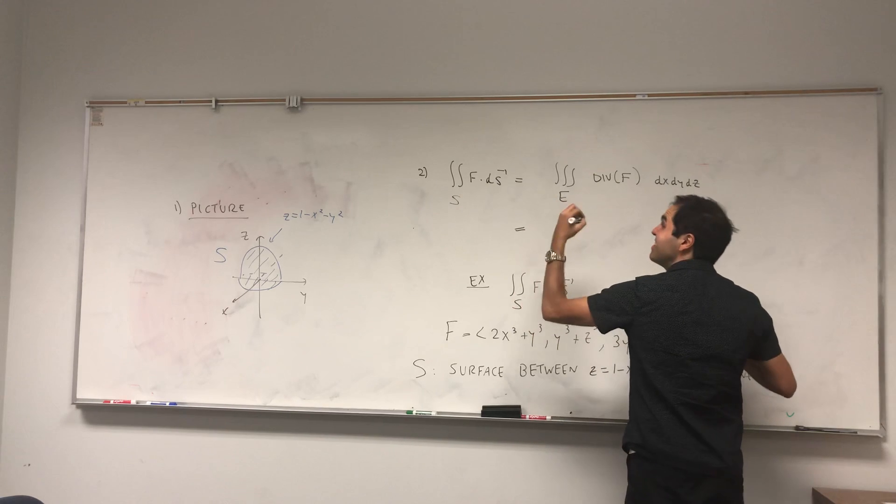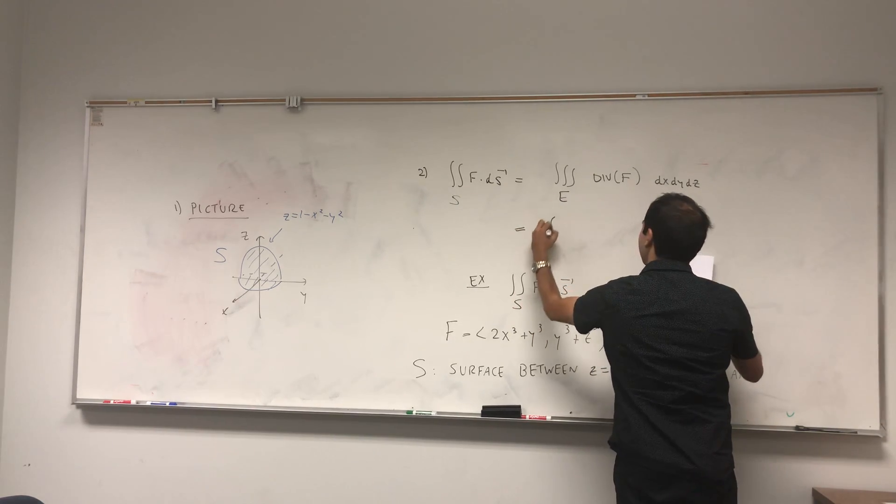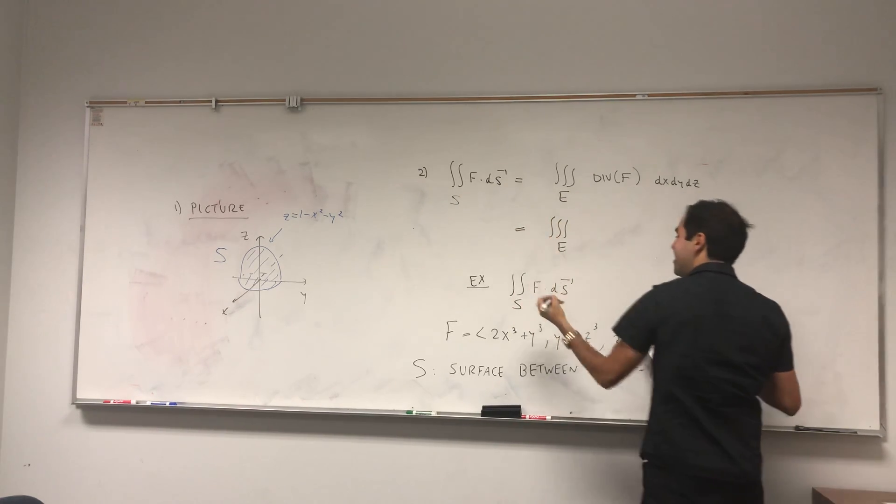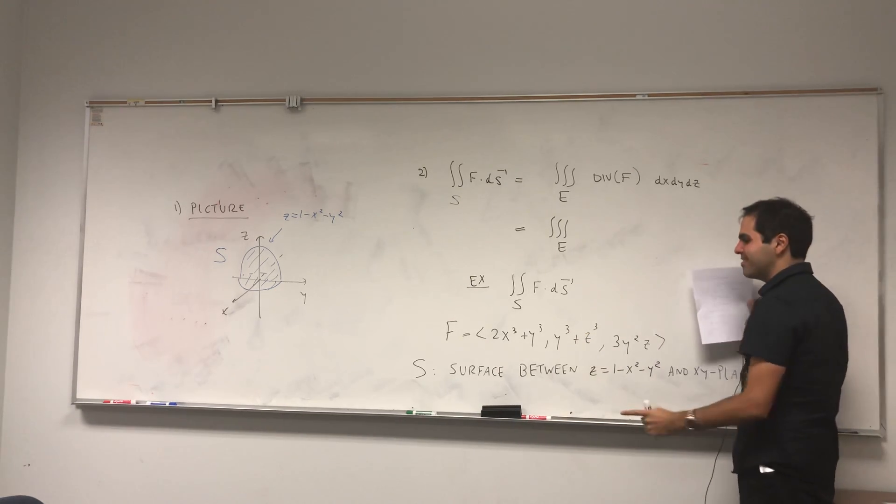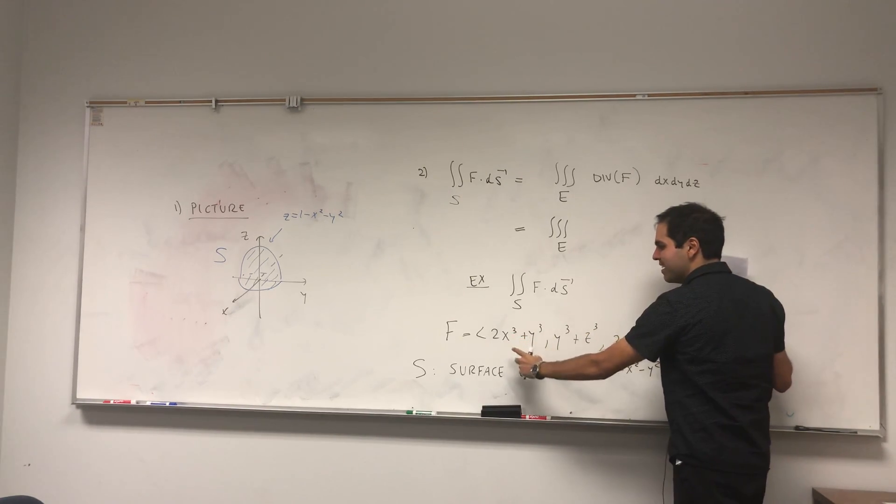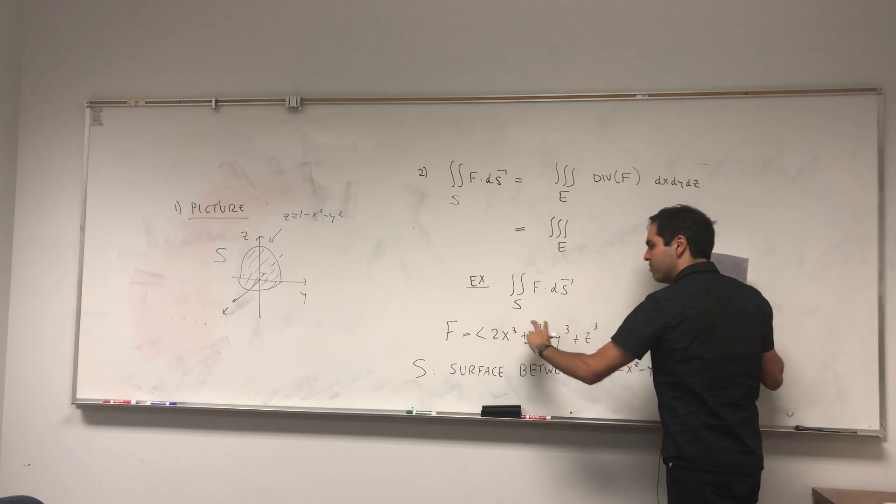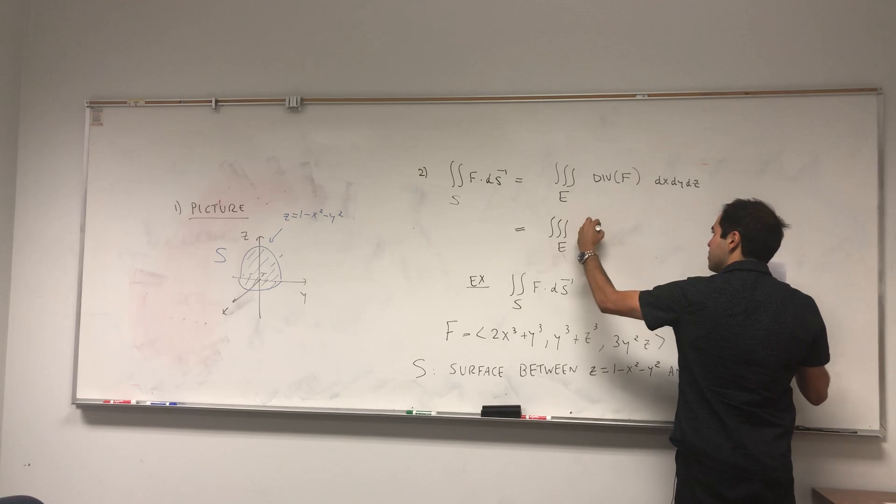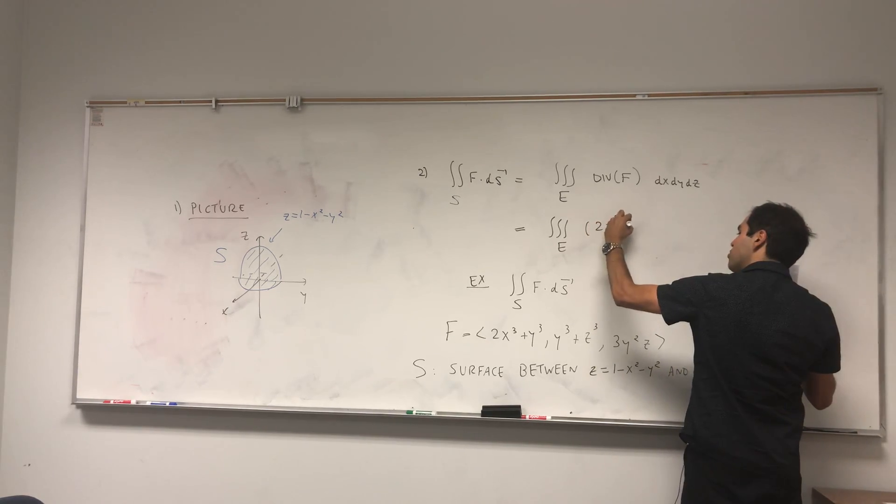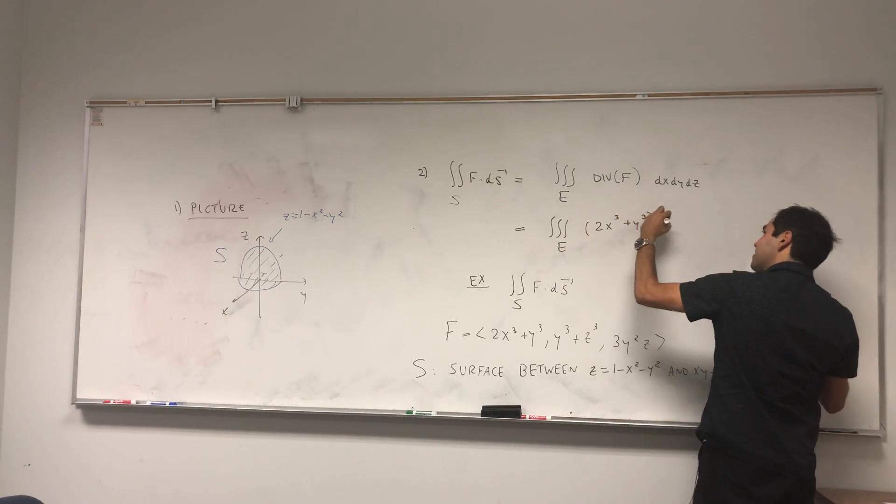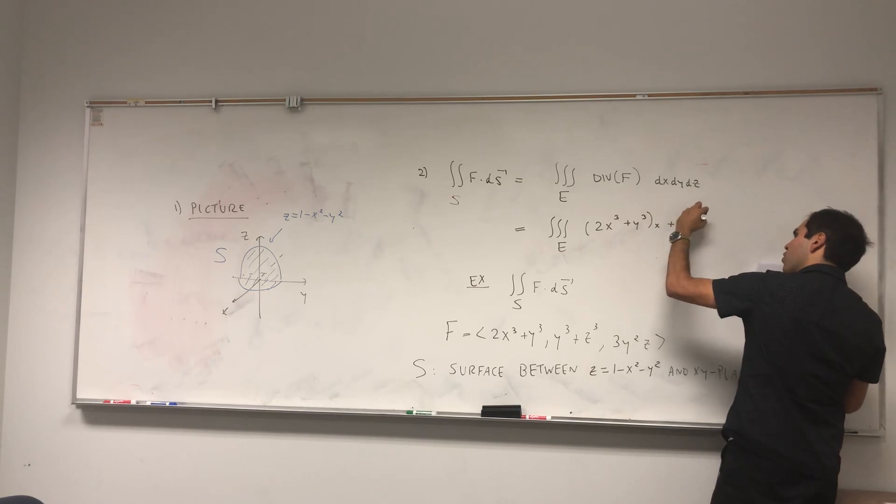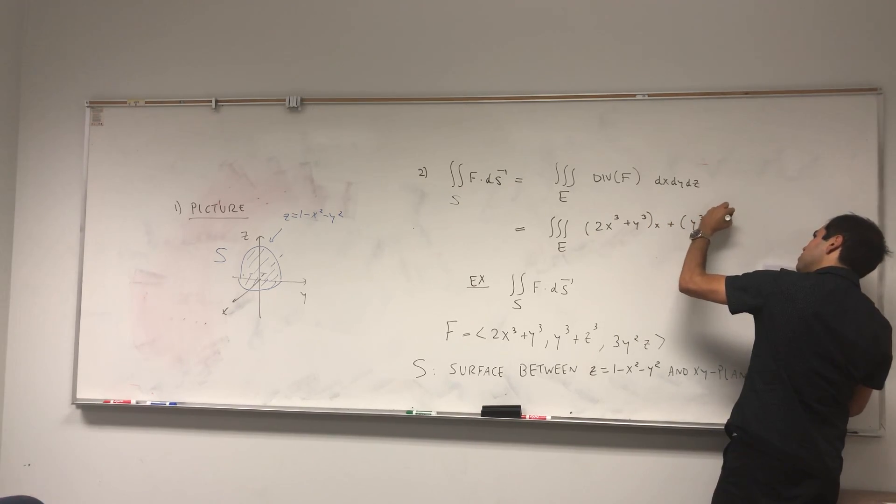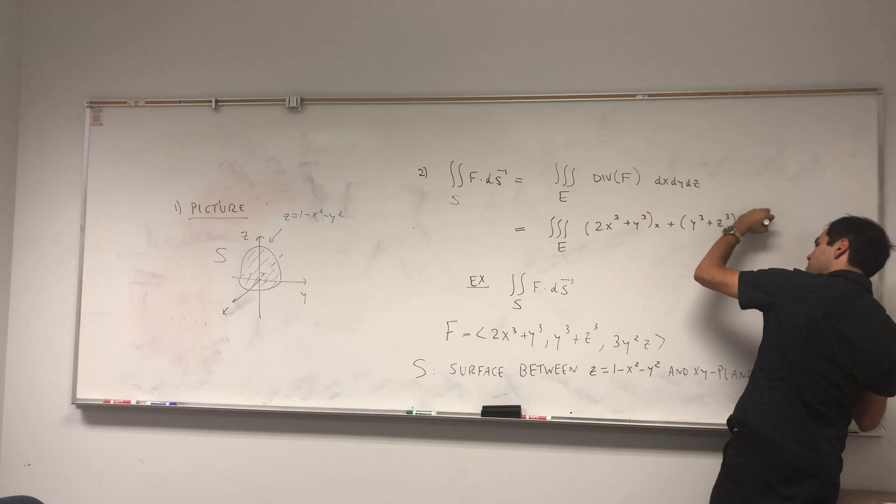I never explained what a divergence is, but it's very easy. You take the x derivative of this plus the y derivative of this plus the z derivative of this. So for (2x³ + y³, y³ + z³, 3y²z), dx dy dz.